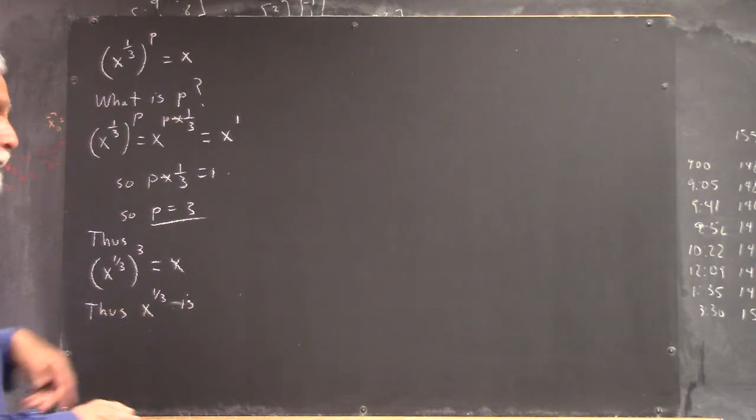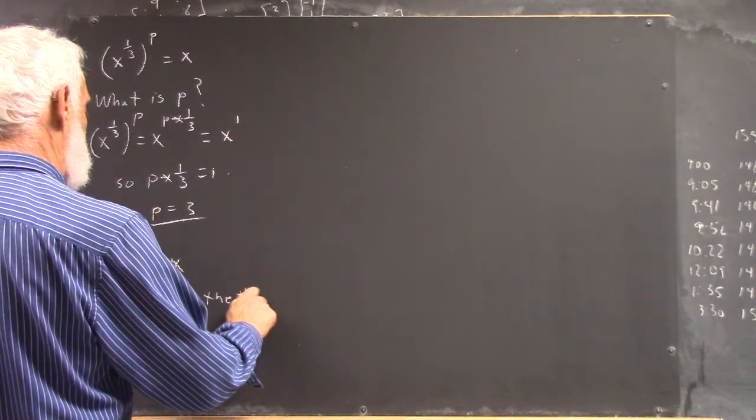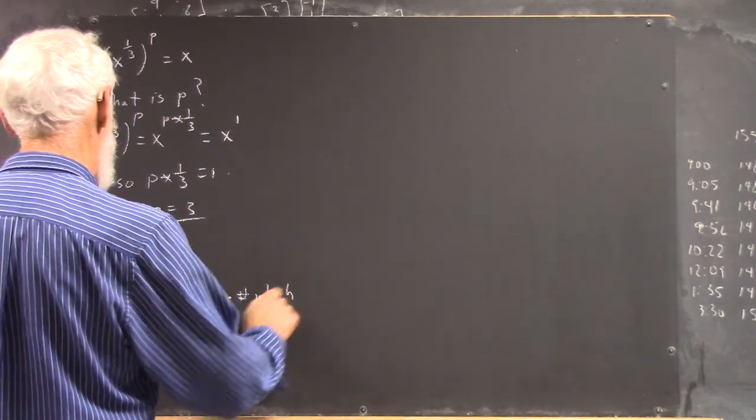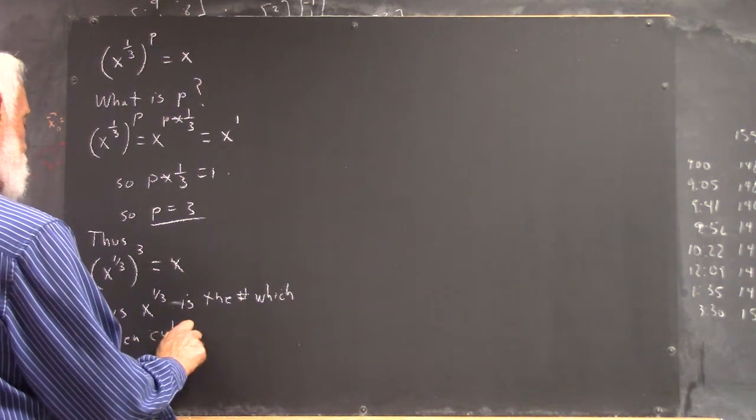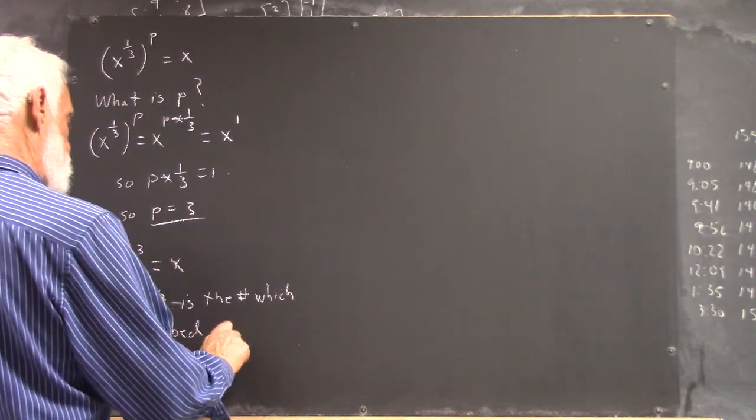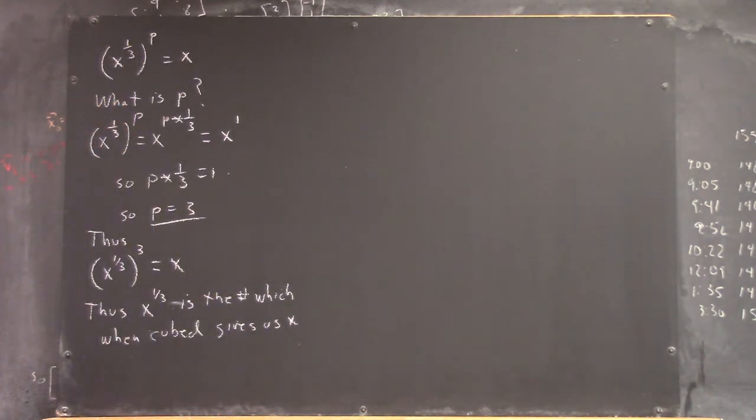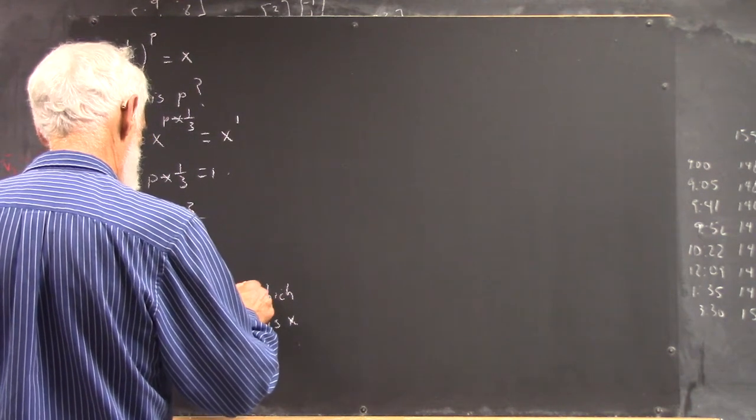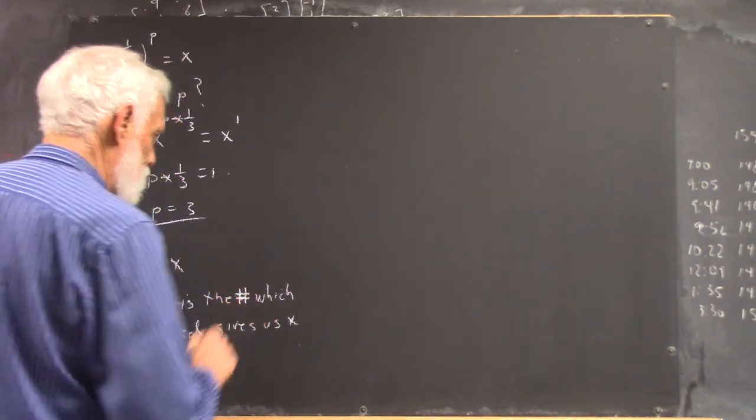Once more: x to the 1/3. Okay, so I can say that x to the 1/3 is the number which when cubed gives us x, right? And this incomprehensible thing here is a pound sign that stands for number. Let's make it look a little better.